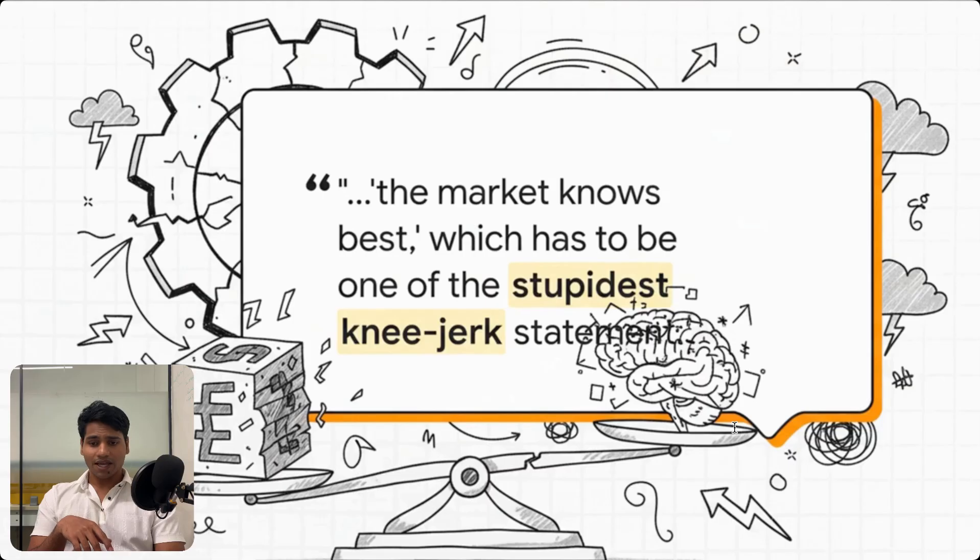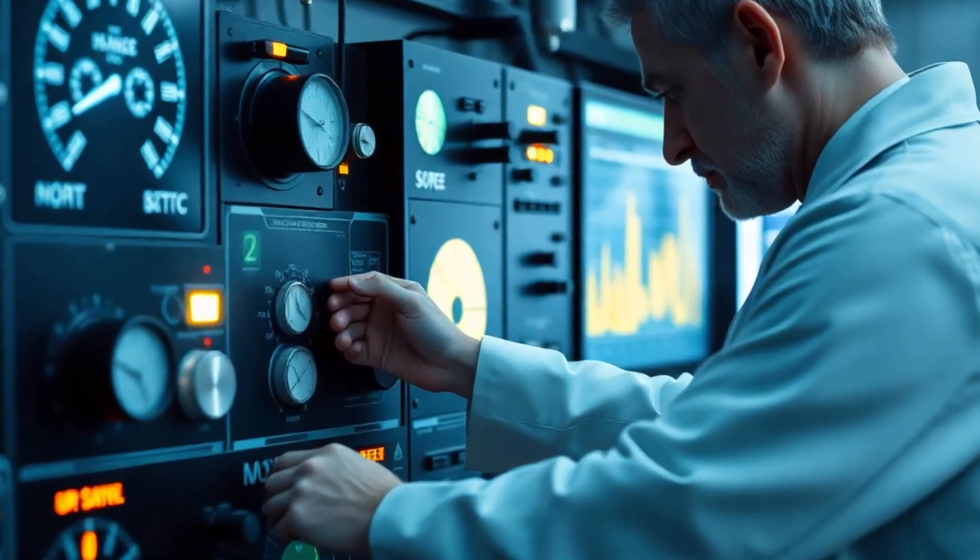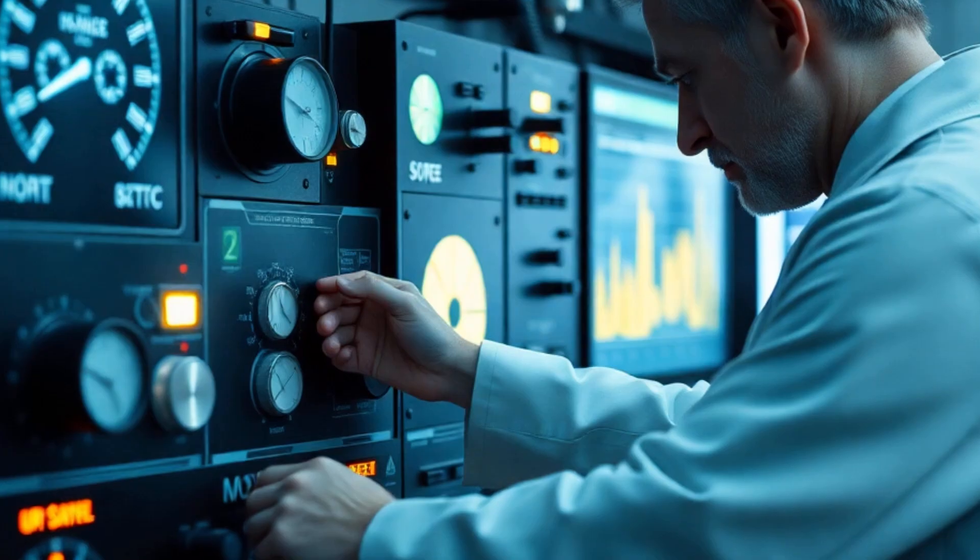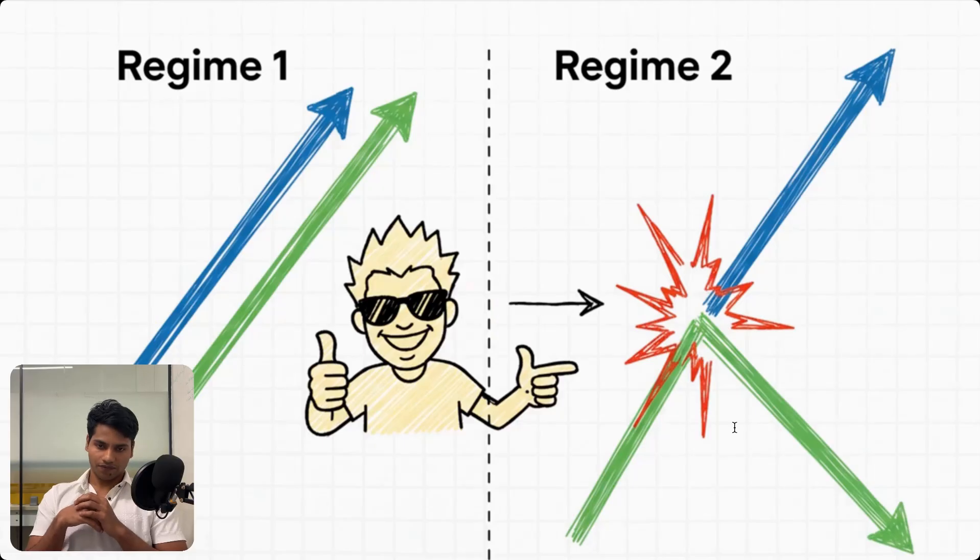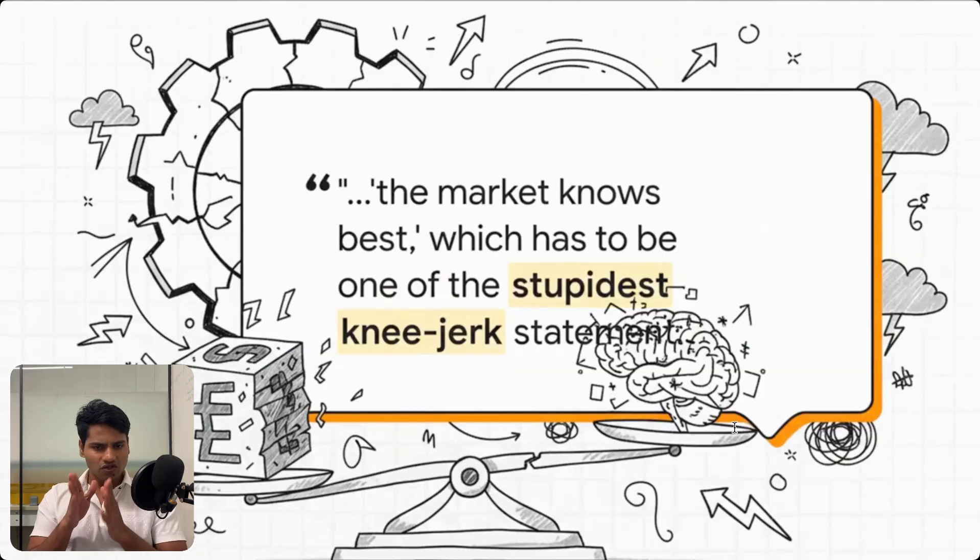This leads us to what might be the most dangerous habit of all. It's a practice called calibration. It's when quants basically force their model to match whatever the market price is right now. It's built on the assumption that the market is always right, and lots of market participants have some pretty strong opinions about this idea.